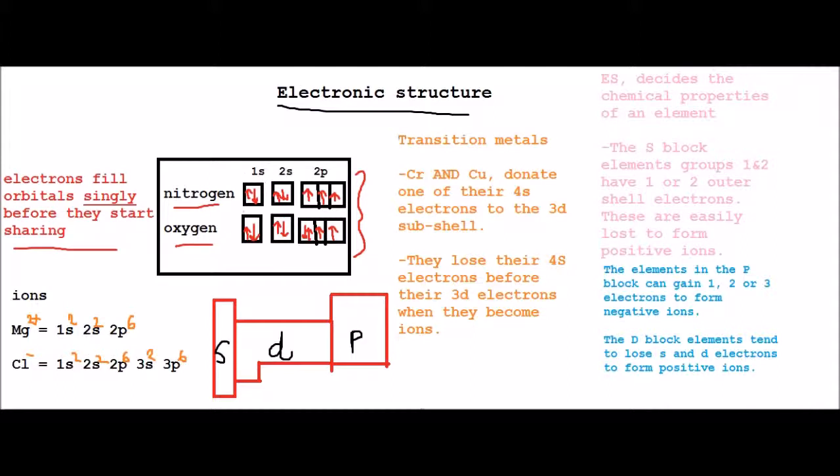As you can see here, the 1s orbitals have doubled up and the 2s orbitals have also doubled up. But in nitrogen, the 2p electrons start to grow singly before they start doubling up. In oxygen it's almost the same, apart from the first orbital here it doubles up and then the next two electrons are singly in the 2p orbitals.